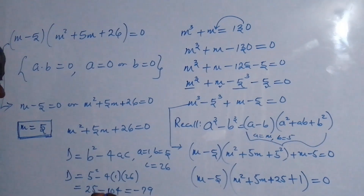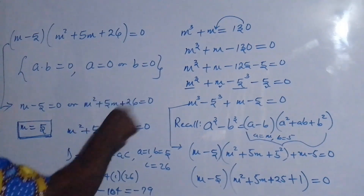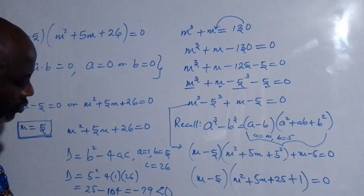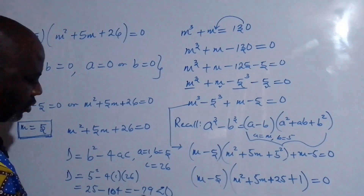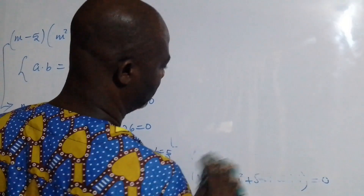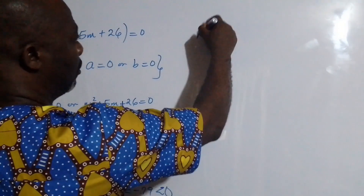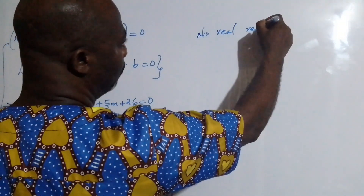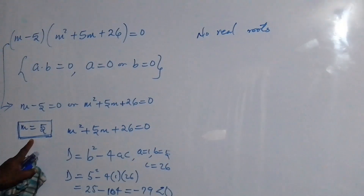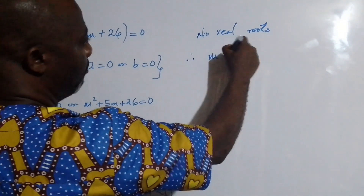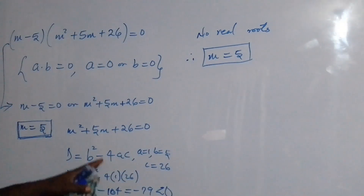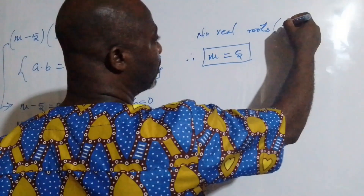Because the value of d, the discriminant of the quadratic expression, is less than 0, this equation has no real roots — the roots are imaginary. Therefore, the only real solution we have is m equal to 5.